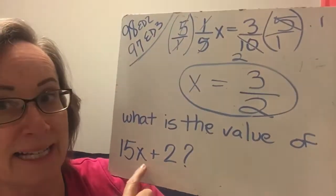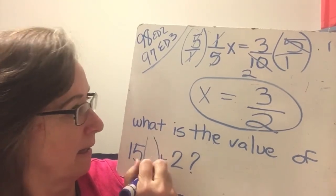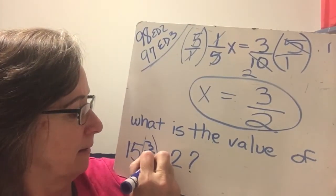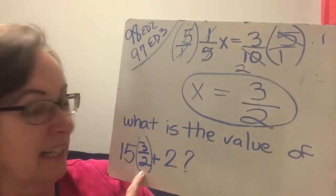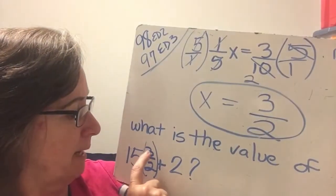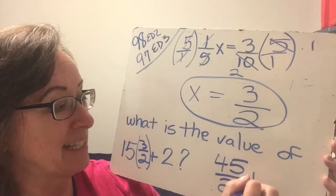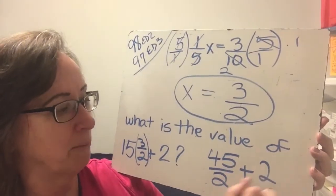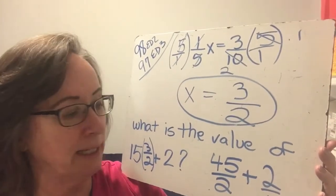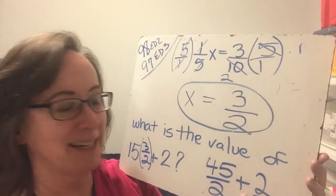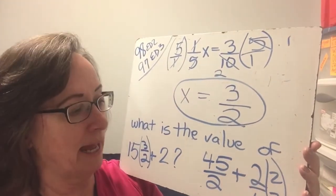So we're going to take our x out and we're going to plug in a 3 halves. That's a plus sign there. So 15 times 3 halves, let's just go ahead and multiply it. 15 times 3 is 45 halves plus 2. But remember, it's kind of hard to do that because we don't have a common denominator. Remember, the 2 is a 2 over 1. And if I want to, I can multiply by 2 over 2, which is 1. And that's going to give me 4 halves.